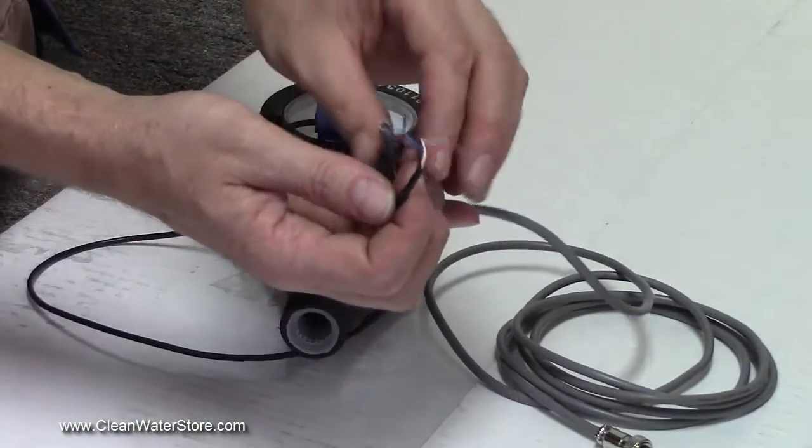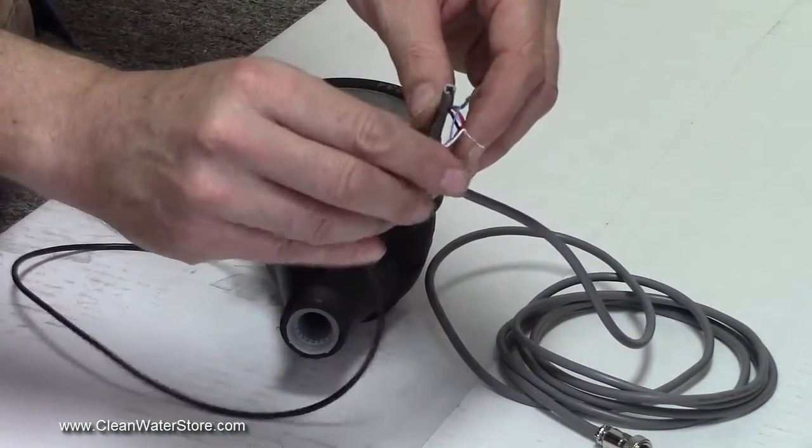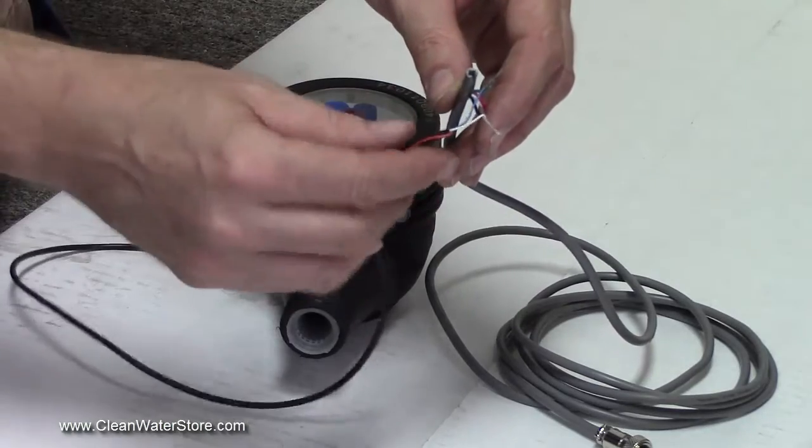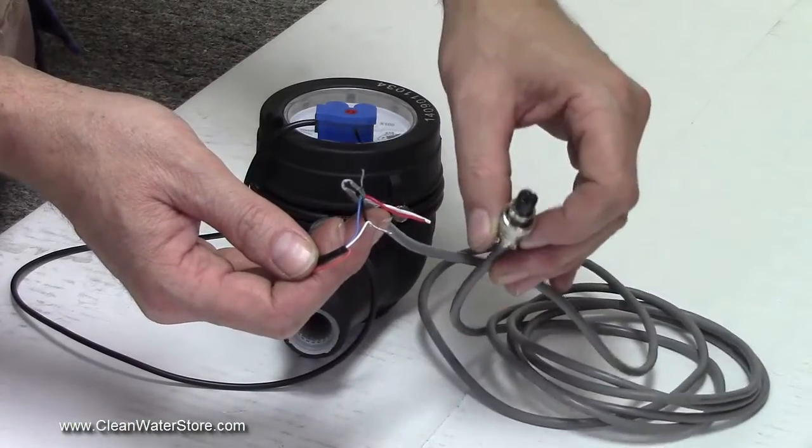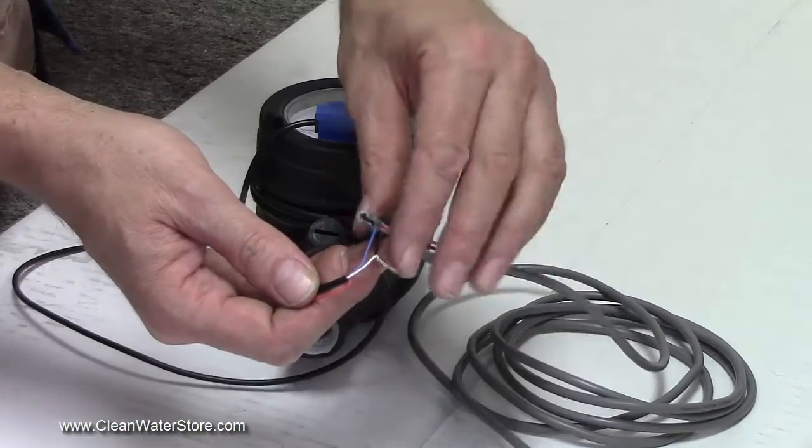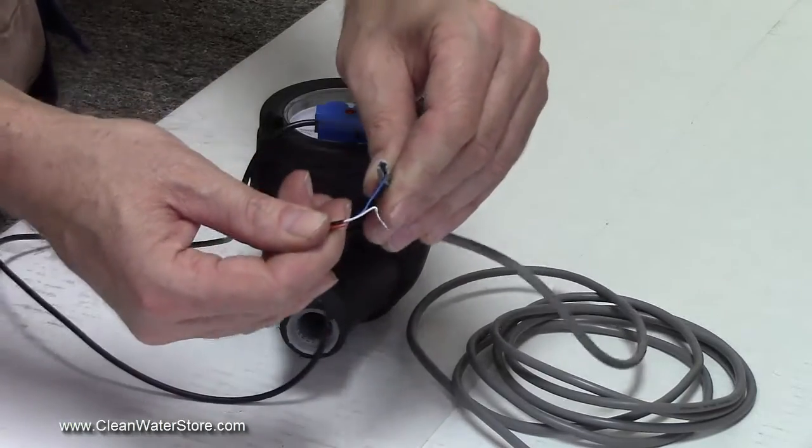The red and the white on the meter cable that goes to the Precision 24 are also tucked out of the way and not used. Okay, thank you very much.